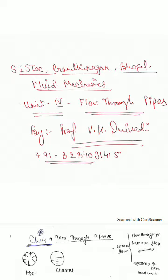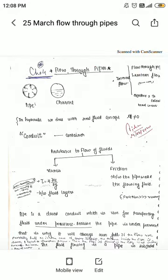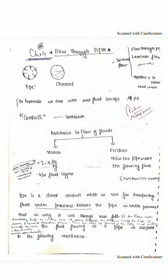In this chapter on flow through pipes, we deal with real fluids only. Real fluids are those fluids which have some viscosity. One thing more: in this chapter I may sometimes use the word 'conduit', which means a container very similar to a pipe. So don't get confused — conduit means container, similar to a pipe.